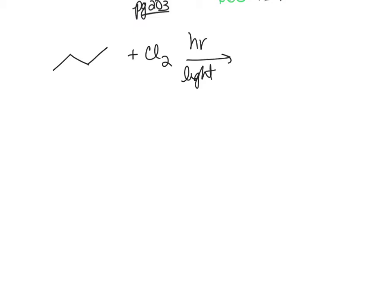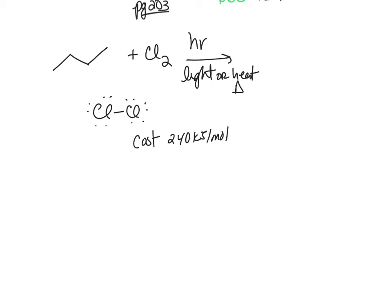Butane plus chlorine requires hν (light) or heat. If you read in your book, it talks about the importance of light. The chlorine-chlorine bond is pretty easy to break — it costs 240 kJ/mol. Blue light can actually do this; it has the right wavelength and the right energy. What it does is a homolytic cleavage. We're going to learn the difference between homolytic and heterolytic cleavage in your Pogel activity.